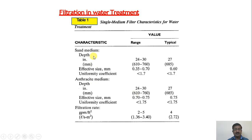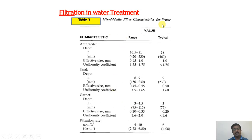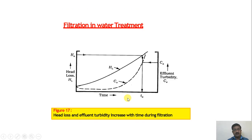In coming lectures we will also study filter characteristics for water treatment, including effective size, uniformity coefficient, depth of media, and filtration rate for different filter types. These values change for dual media and mixed multimedia filters. Head loss is an important aspect associated with filtration, and we are going to discuss it in detail.